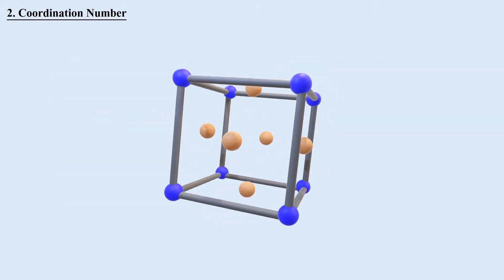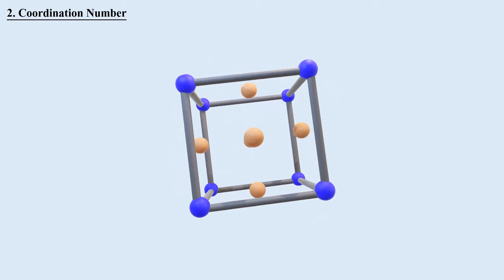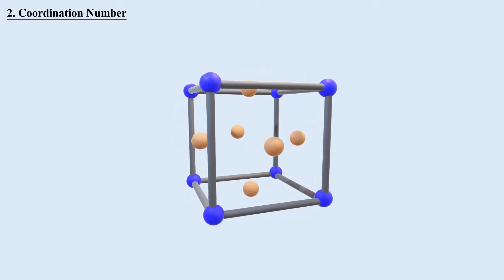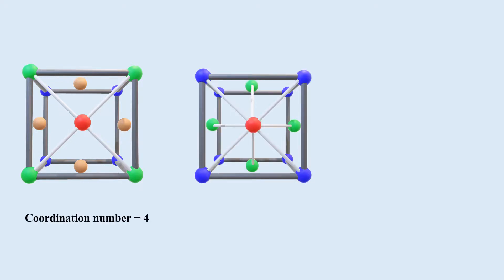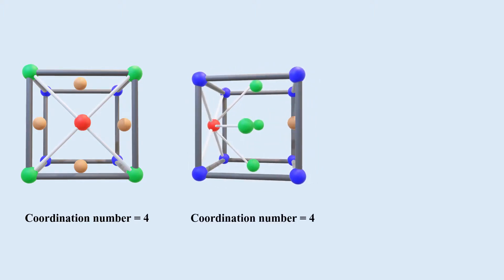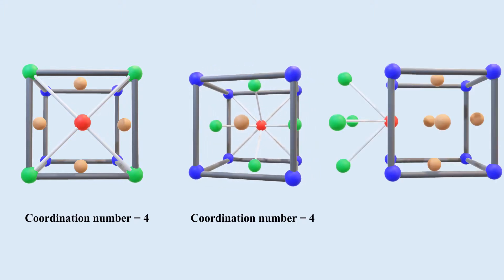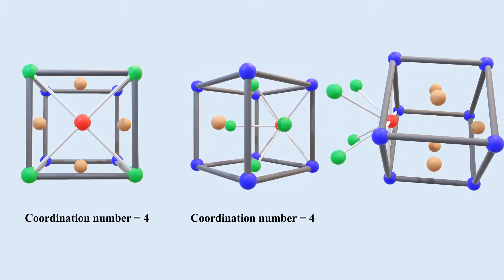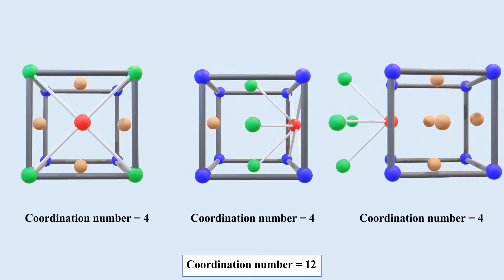Coordination number is the number of nearest neighboring atoms. To calculate the coordination number of FCC unit cell, let's consider any face-centered atom. This atom is closest to four corner atoms of its face. Apart from this, if we rotate the crystal, this atom is also connected with the center atom of four perpendicular faces. Similarly, the perpendicular faces on the outside contribute four more. So FCC unit cell has 4 + 4 + 4 = 12 as its coordination number.